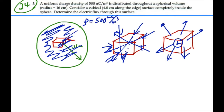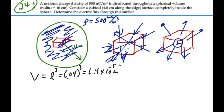So we need to find the volume of this cube. Since it is a cube, the volume equals the edge length cubed: 4 centimeters, or 0.04 meters, cubed. That gives us a volume of 6.4 times 10 to the minus 5 cubic meters. The charge inside this cube is the charge density times this volume — density is the amount of charge per volume — so that is 500 nanocoulombs per meter cubed times 6.4 times 10 to the minus 5 meters cubed.